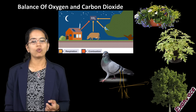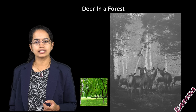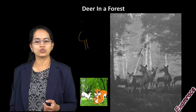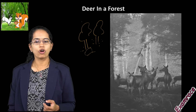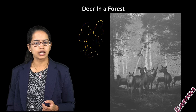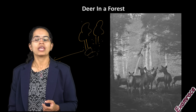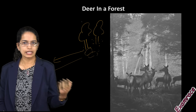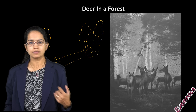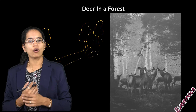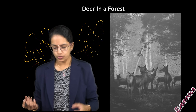Seed dispersal is another important concept. Animals like deer and squirrels run from one place to another, carrying seeds with them, which then grow into new plants in different regions — creating new forests or green environments. Deer are herbivores and important in maintaining the food chain, and these herbivores are later consumed by carnivores. Regenerating and regrowing of forests is therefore really important.